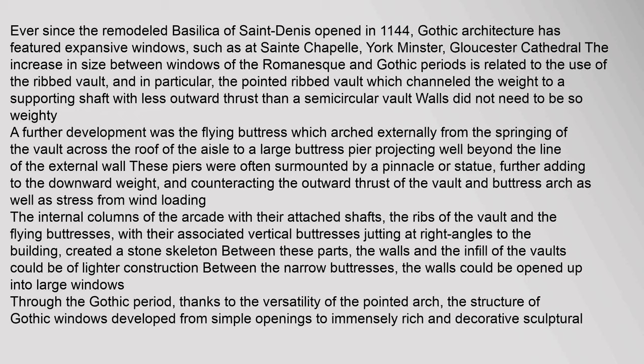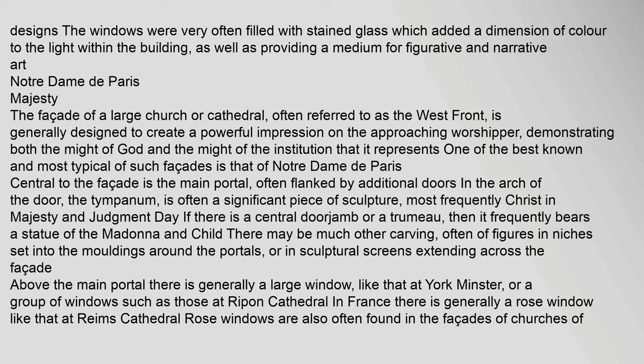The increase in size between windows of the Romanesque and Gothic periods is related to the use of the ribbed vault, and in particular the pointed ribbed vault, which channeled the weight to a supporting shaft with less outward thrust than a semicircular vault, so walls did not need to be so weighty. A further development was the flying buttress, which arched externally from the springing of the vault across the roof of the aisle to a large buttress pier projecting well beyond the line of the external wall. These piers were often surmounted by a pinnacle or statue, further adding to the downward weight and counteracting the outward thrust of the vault. Between these structural parts, the walls could be opened up into large windows.